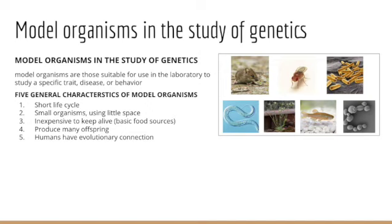To be considered a model organism, organisms need to have a series of characteristics. First, they need to have a very short life cycle — it could be minutes, hours, days, or weeks — compared to humans with a life cycle of potentially 80 to 90 years. This is critical because the rate-limiting factor in genetics research is often life cycle: from conception to the time an organism is old enough to reproduce. We also want small organisms — things that can be housed in a lab with little space and that are inexpensive to keep alive, requiring just basic food sources, nothing complicated or difficult to secure.